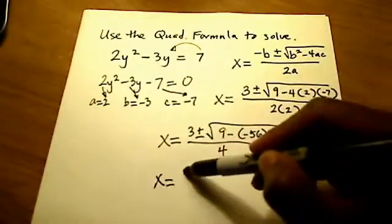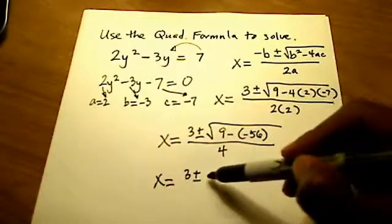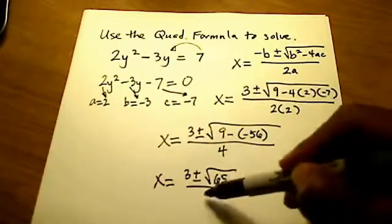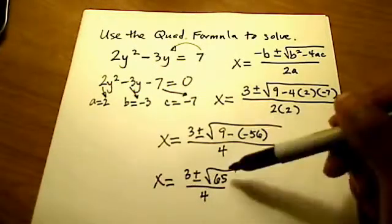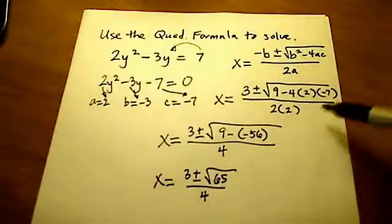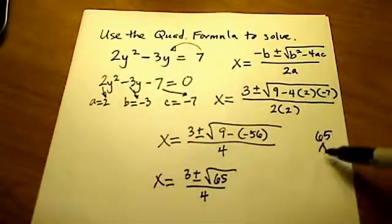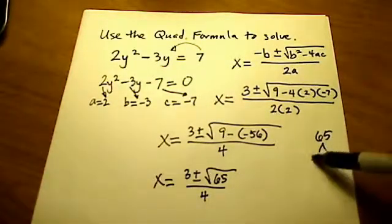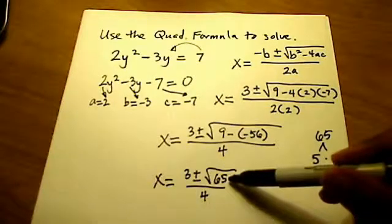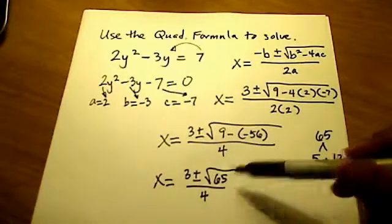So we're almost done. What I have then is 3 plus or minus the square root of 65, all over 4. I know that I cannot simplify 65 anymore, because if I try to factor it, it's just 5 times 13 — no identical pairs that I could pull out of that square root. So radical 65, or square root of 65, is as simple as I can get it.